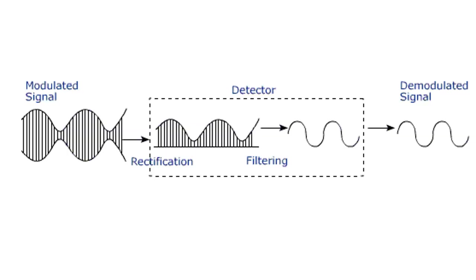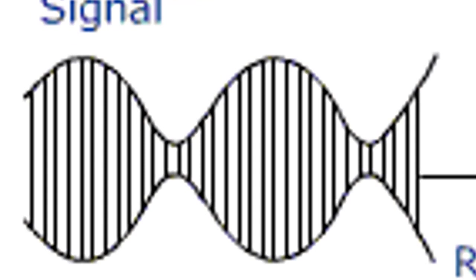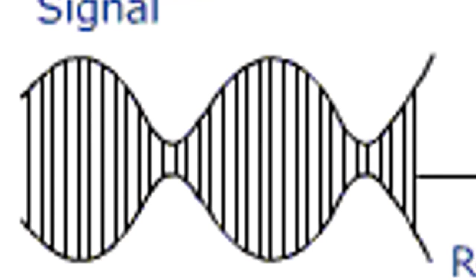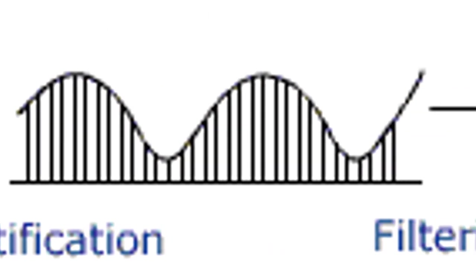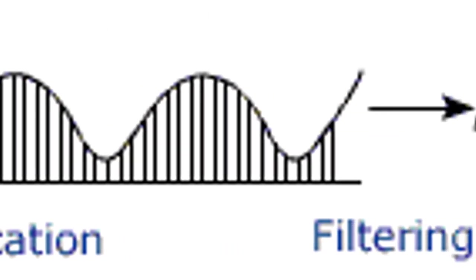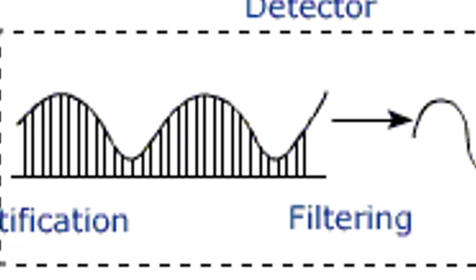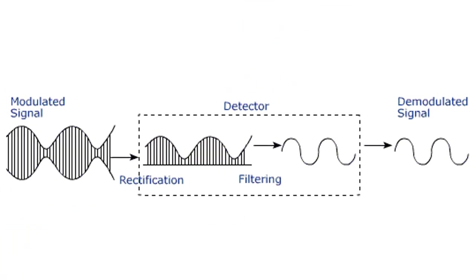The carrier signal frequency causes the speaker to vibrate. We use the carrier signal and message signal. This is demodulation. In this demodulation process, the carrier frequency will be removed from the negative side. The modulated signal has a positive side and a negative side which are equal, so the average is zero, and the speaker is not working. In this circuit, the negative part is removed and the average value reaches its maximum.